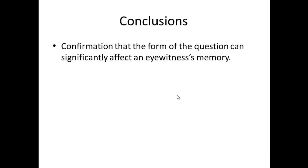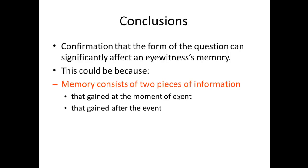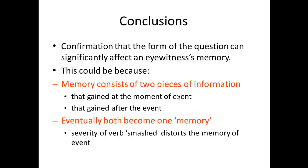What did they conclude? First of all, the form of the question can significantly affect an eyewitness's memory. What Loftus and Palmer proposed was that memory actually consists of two pieces of information: what is gained at the moment of the event, what you actually witness, what you see, but also any information you gain after the event about the event becomes integrated into the original memory of the event. And it's very difficult for the individual to pick apart which was the actual original bit and which one you've integrated in from information you've received after the event. So they become one memory.